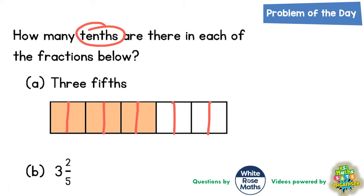So now we've got 10 tenths. All we have to do is count up how many pieces are shaded. The three fifths that were originally shaded give us 1, 2, 3, 4, 5, 6 — six pieces shaded. So the answer would be six tenths.